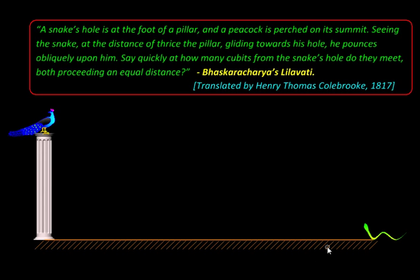At a distance of thrice the pillar, so if the pillar's height is 9 units, then the distance of the snake would be 3 times, 27 units.